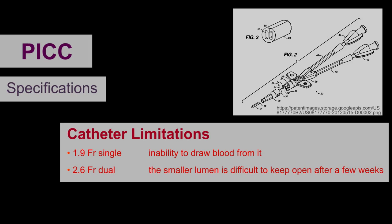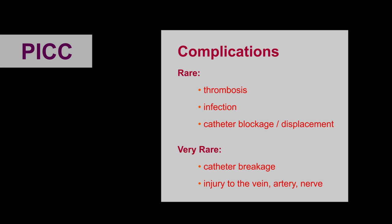A variety of catheter limitations exist. For instance, there is an inability to draw blood from a 1.9 French single. And in a 2.6 French dual, the smaller lumen is difficult to keep open after a few weeks. Rarer complications include thrombosis, infection, and catheter blockage or displacement. Even rarer complications include catheter breakage and injury to the vessel itself or the surrounding neurovasculature.